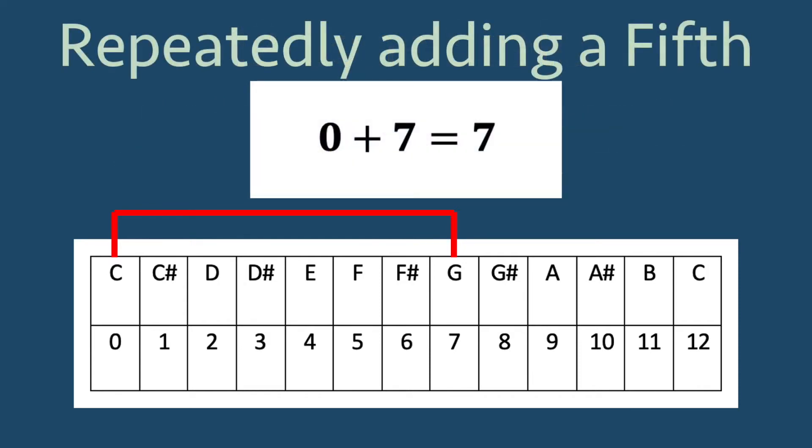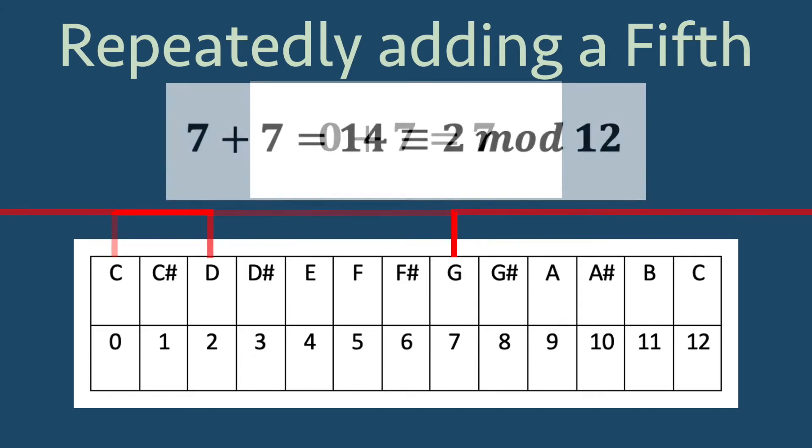In our table from before, the interval from C to G is a perfect fifth, and the addition is 0 plus 7 equals 7. Adding another perfect fifth, we would get 7 plus 7 equal 14, which is congruent to 2 modulo 12, and gives us the note D.